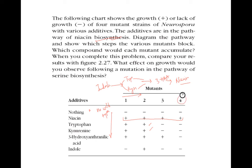If you add niacin to mutant 4 it will grow, otherwise it will not grow, which means mutant 4 is between 3-hydroxyanthranilic acid and niacin. Even if you provide 3-hydroxyanthranilic acid, it will not convert into niacin because the mutation blocks that step.